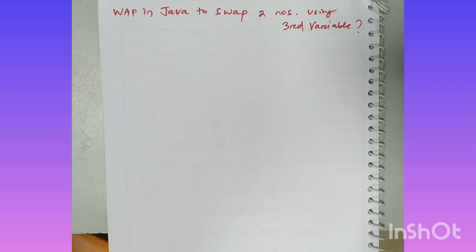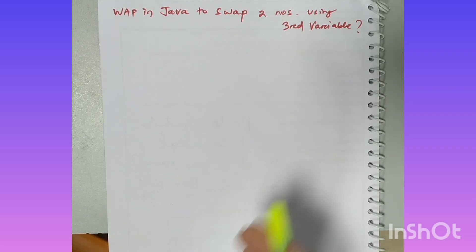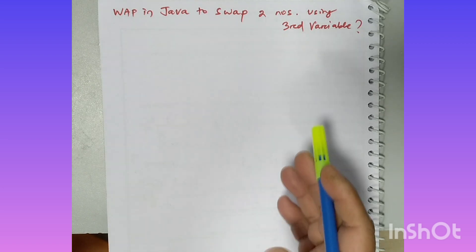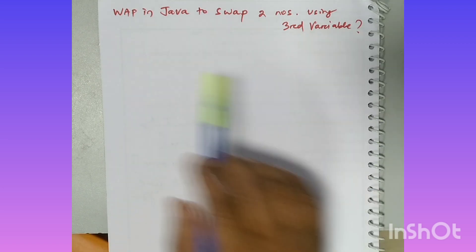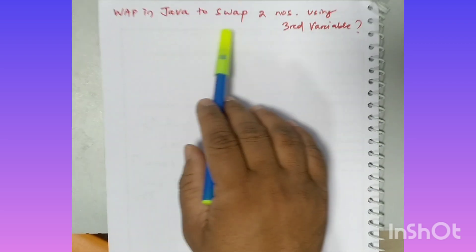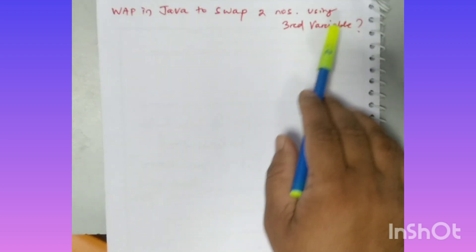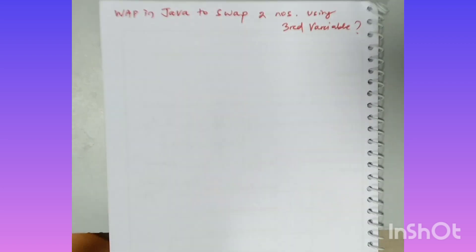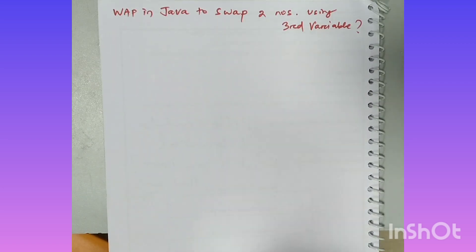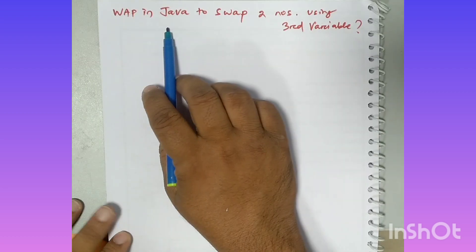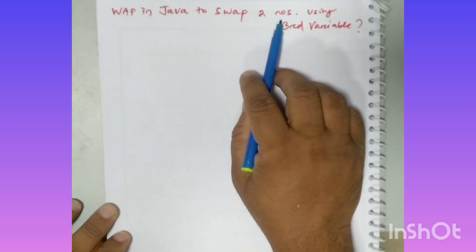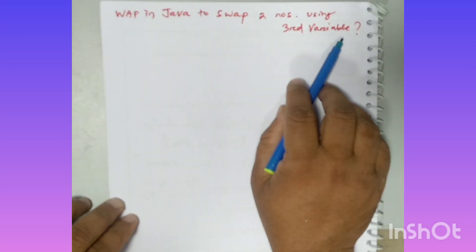Hey students, in today's video we are going to discuss about computer application Java program. This is a very simple but very important question: write a program in Java to swap two numbers using a third variable.